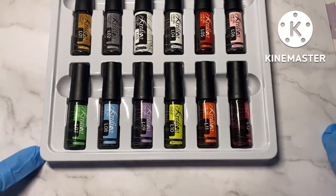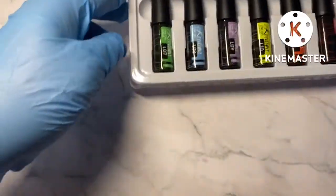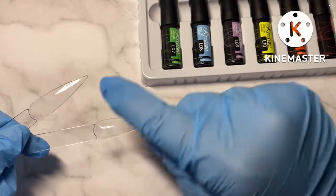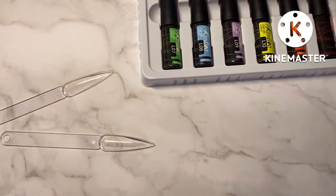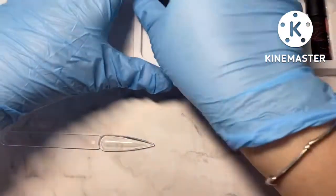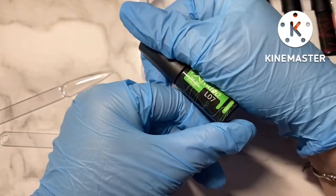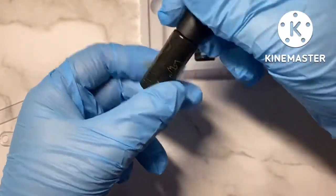I thought I would put them on a line on some swatch sticks and we can see what they're like. So I'm going to start with this one, L07, so it looks like a green.